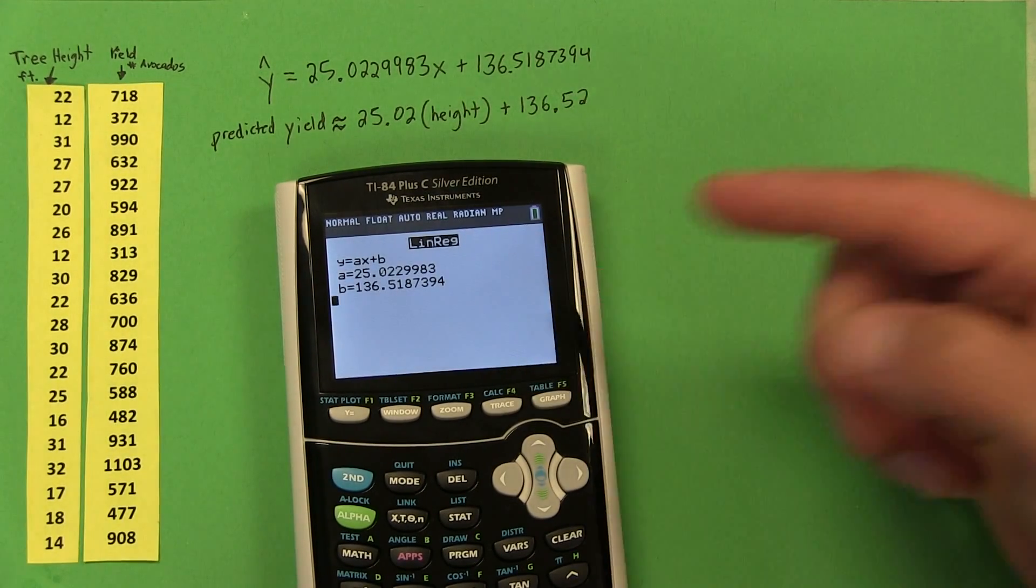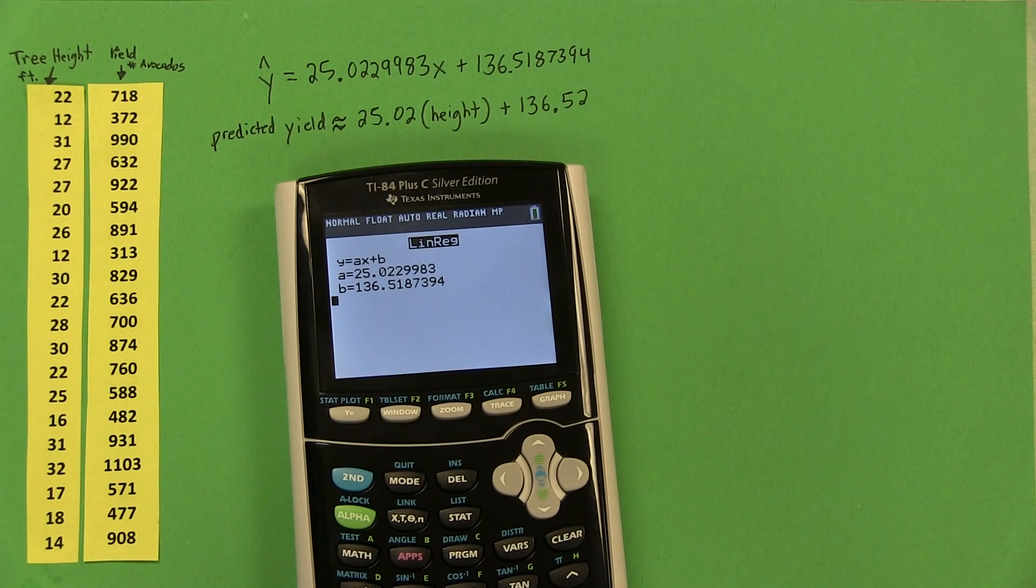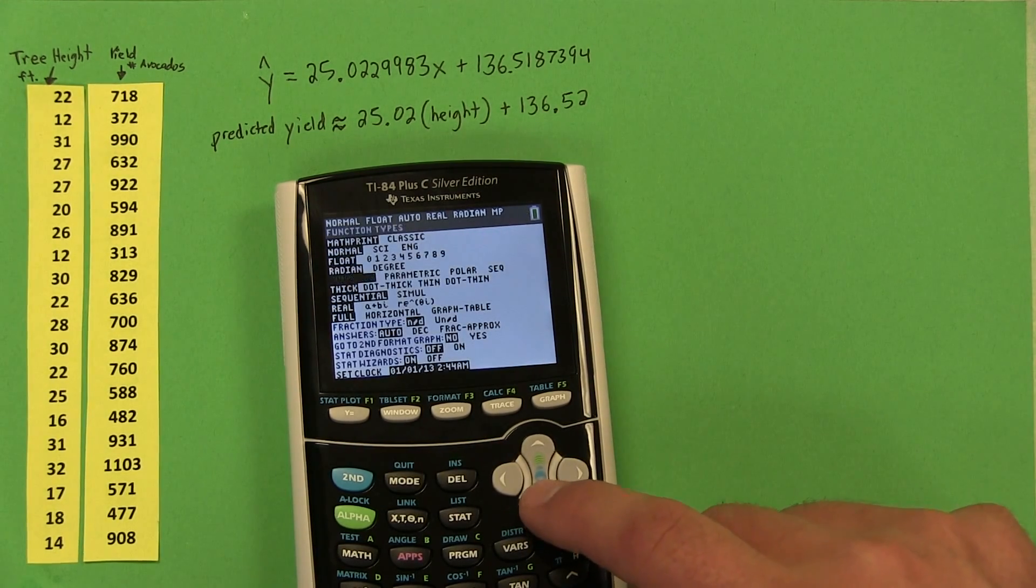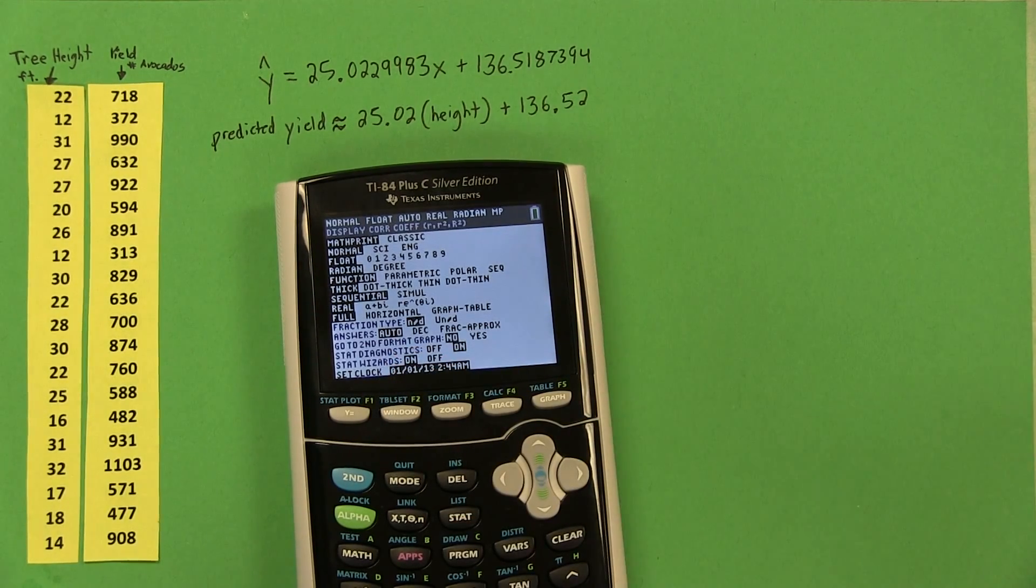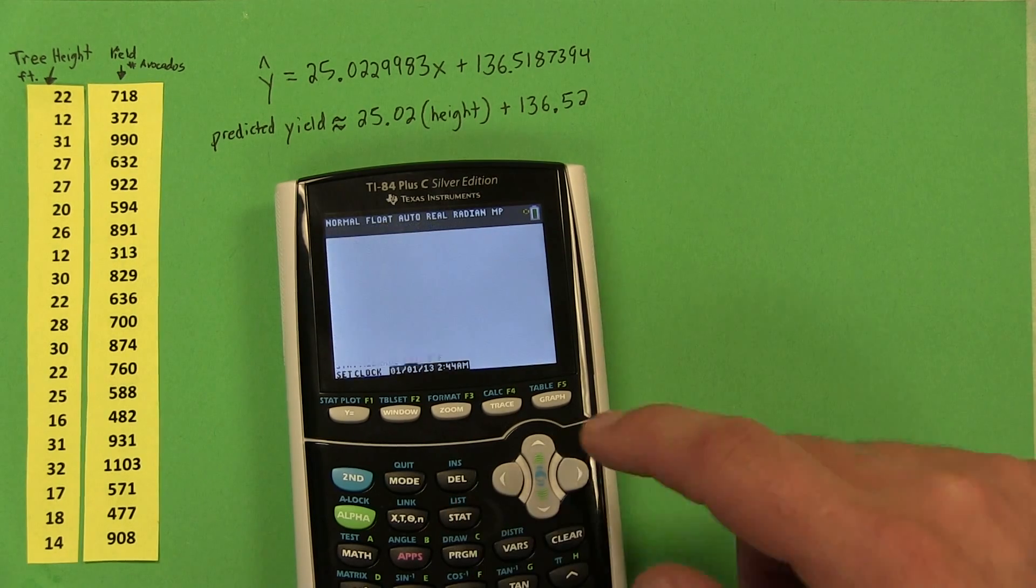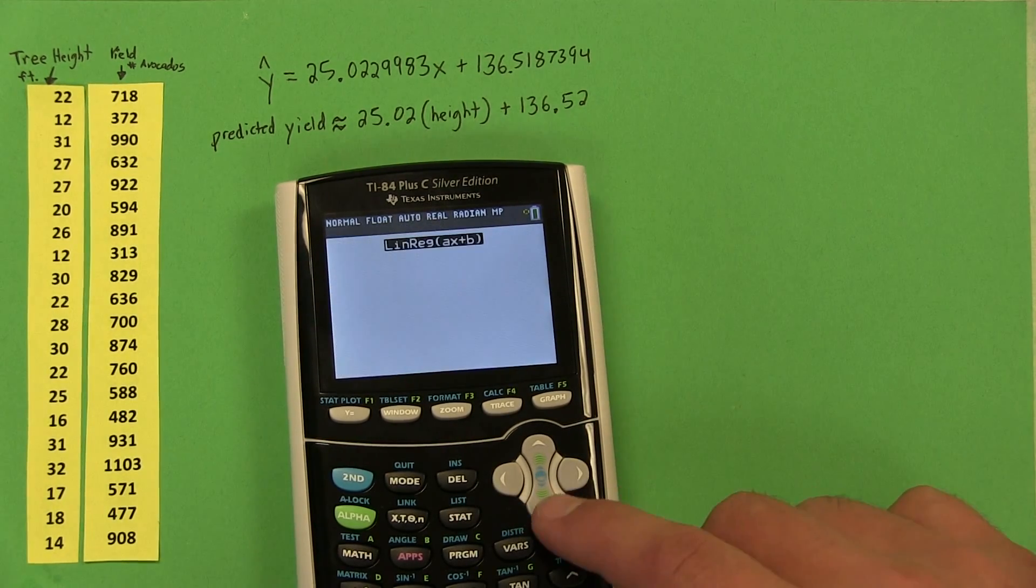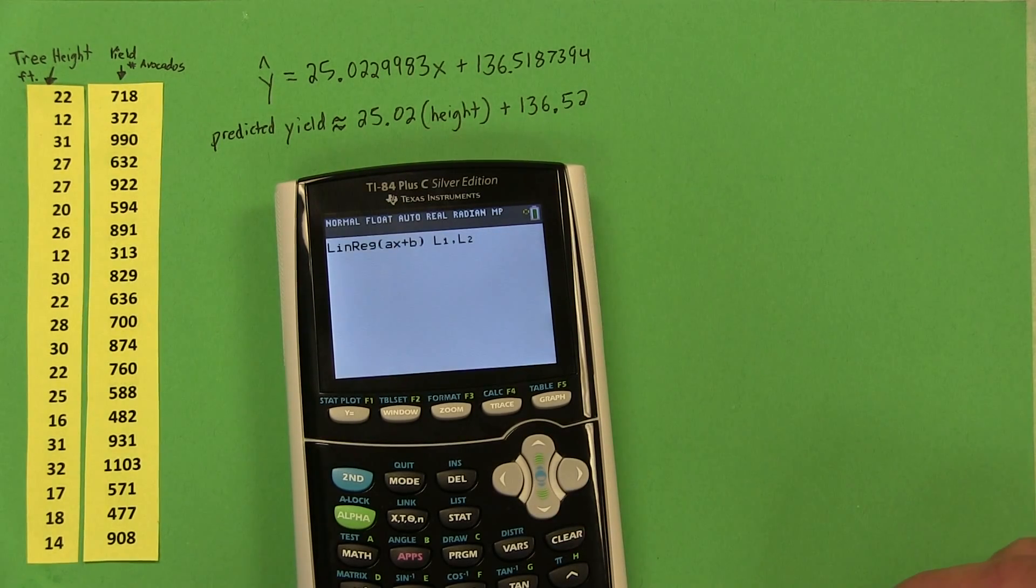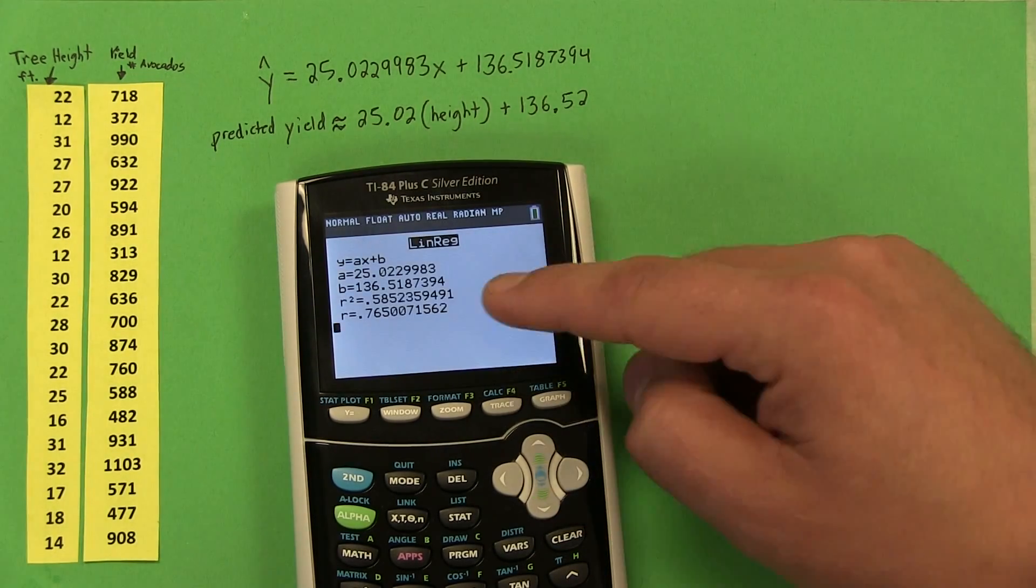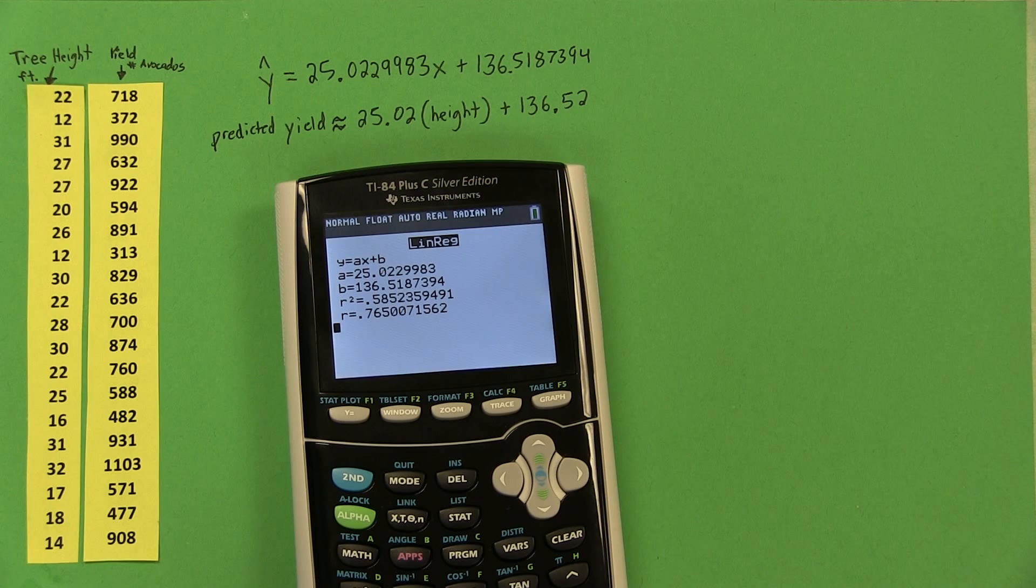Now you can actually get this calculate lin reg menu to do even more. If you press the mode button, and you scroll all the way down to where it says stat diagnostics, it's right there, and turn that on. Now, when we rerun that linear regression calculation with the same list 1 and list 2, we get a few more things. We get r squared and r, which are some useful pieces of information.